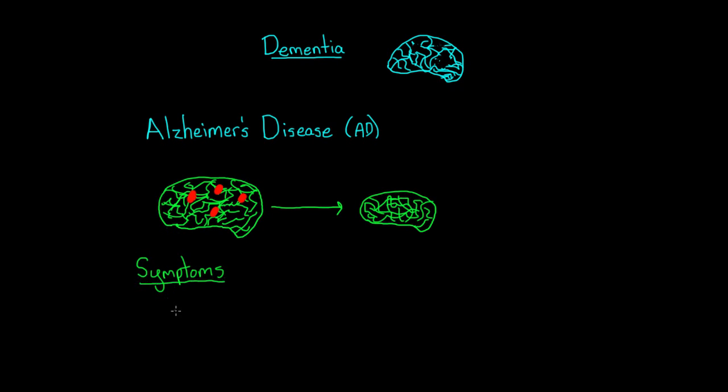The earliest symptoms of AD are memory loss, specifically the inability to encode or retrieve recent memories. Subsequent problems include difficulty with attention, planning, semantic memory, and abstract thinking.